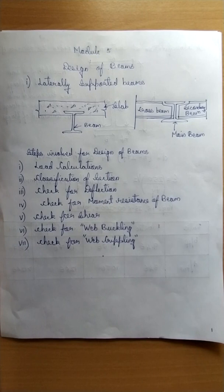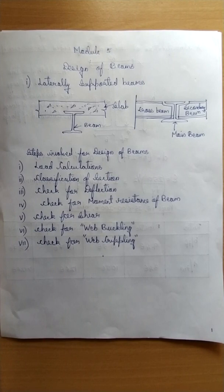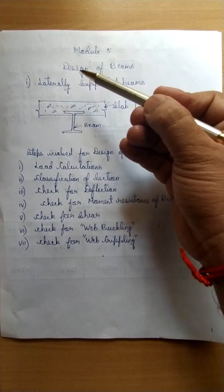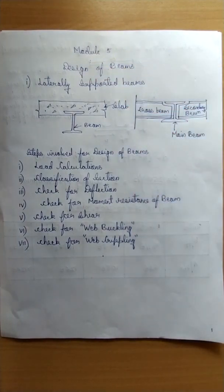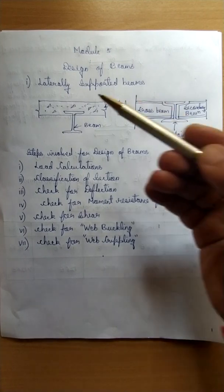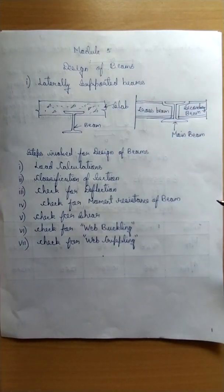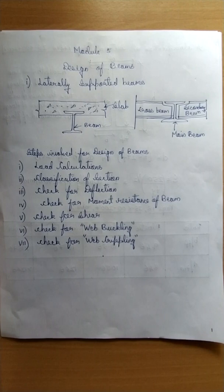Hello students, welcome to the online learning and training course. I am Professor Sagar B and I will be discussing the subject design of steel structural elements. Today I will be discussing module number five, the topic of which is the design of beams. We have two types of beams: one is laterally supported beam and the other is laterally unsupported beam. Today we will discuss laterally supported beams, their design, and the design procedure.